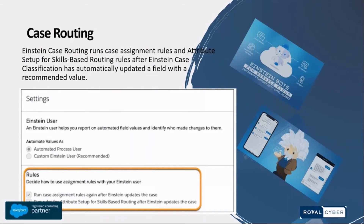The last feature I'm going to cover in this webinar is case routing. Remember how I talked about combining two Einstein Analytics features to make them more powerful? That applies here too — for NBA, you can use Einstein Discovery on top of it to make it even more powerful. For Einstein Case Routing, there's a prerequisite feature called Einstein Case Classification. Case Classification automatically updates fields based on the history of cases the customer service agent has been resolving.